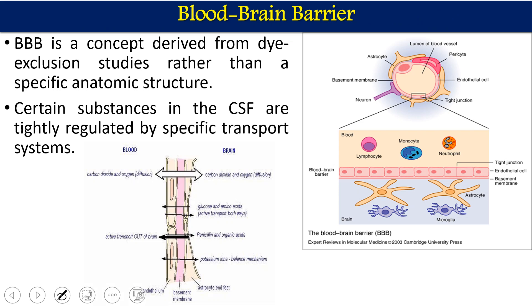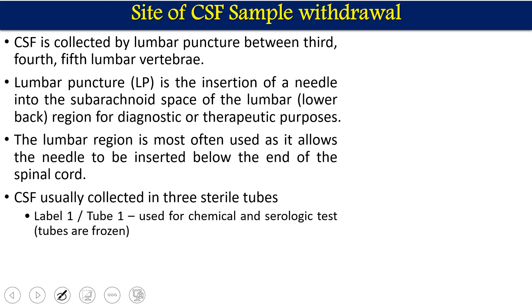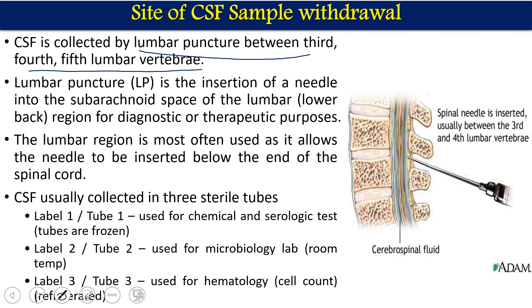The blood-brain barrier (BBB) is a kind of border that differentiates the brain from the blood. Not everything present in the blood can reach the brain — this selective protection is the function of the BBB, which protects the brain from different toxic substances. CSF is collected mainly by lumbar puncture, between the third, fourth, and fifth lumbar vertebrae. Lumbar puncture involves inserting a needle into the subarachnoid space of the lumbar region while the patient bends forward to widen the vertebral gaps.